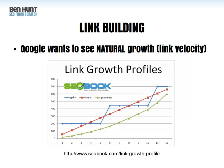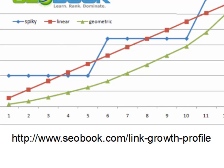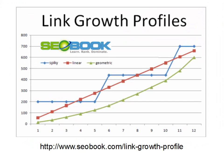Now let's talk about link building. One of the important things to bear in mind is that Google wants to see natural growth. It's fairly easy to spot the difference between a website being promoted unnaturally versus one that grows naturally. I recommend looking at this article on seobook.com, Aaron Wall's site, which shows different kinds of link growth profiles. The most natural link growth profile is the green geometric line — something that starts from not very much and builds steadily. That's the snowball effect right there.